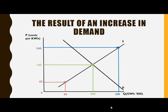We have a demand curve and a supply curve, and where they intersect is the position where the quantity demanded equals the quantity supplied. The equilibrium quantity is 200 and the equilibrium price is 160.